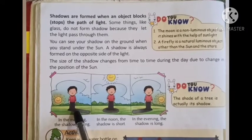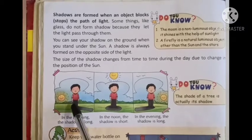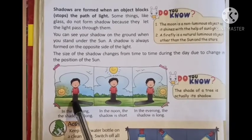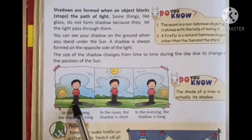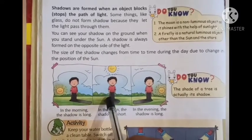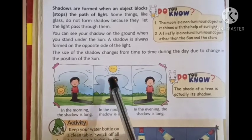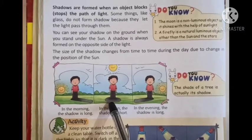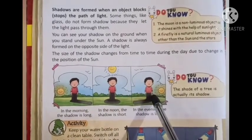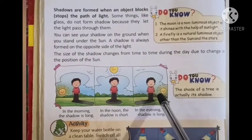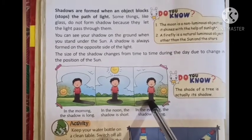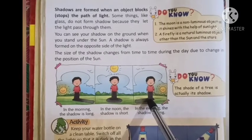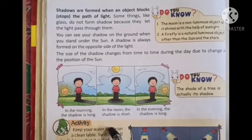This boy is standing on the ground and it is morning time — the sun is rising. The sun is giving light, the light falls on this boy and gets obstructed or blocked. So you can see the shadow of this boy, and the shadow is long. After some time, maybe it is noon — 12 o'clock in the afternoon. Here you can see the sun is on the top, right above the boy, so the shadow is very short. And in the third picture, the sun is setting — it is evening time — and the shadow is long again. So the size of the shadow keeps changing from time to time during the day due to the change in the position of the sun.